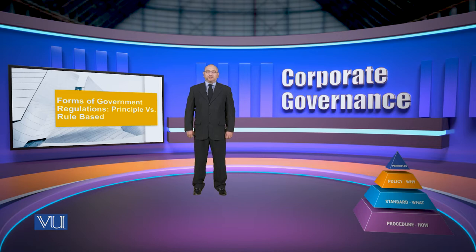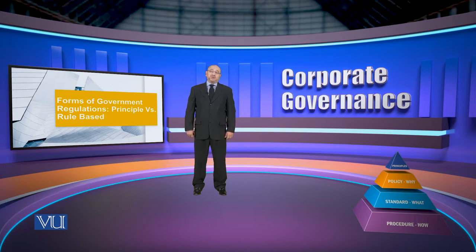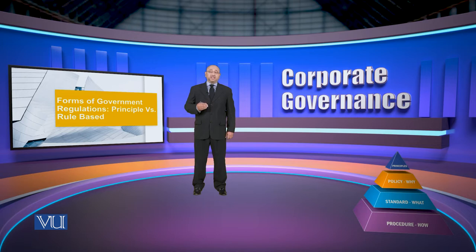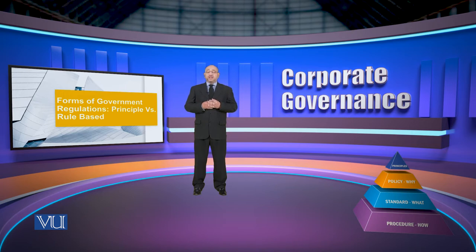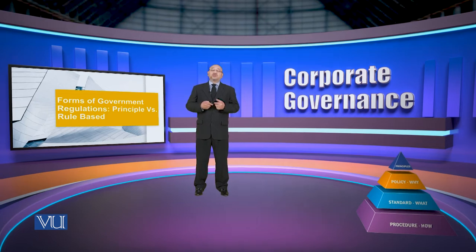Welcome back to corporate governance. In the past few sessions we've been talking about the government as a major stakeholder in corporate governance, looking at its various functions, its role, and how it tends to regulate the whole corporate sector. When looking at different government regulations, in our last session we talked about the difference between discretionary and non-discretionary regulations, and also mandatory versus voluntary regulations. Today we're going to talk about principle versus rule-based government regulations. The difference between all the different forms of regulations is very subtle, and many times we see grey areas and overlapping, but it's very important that they be distinguished — it can also be a matter of interpretation.